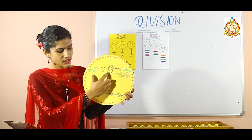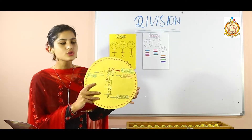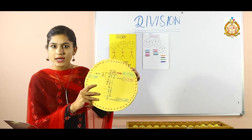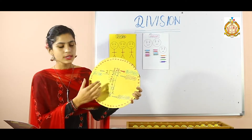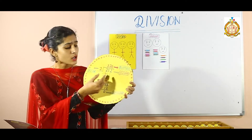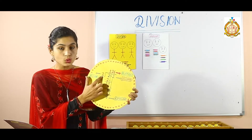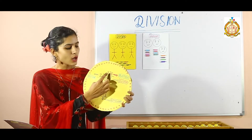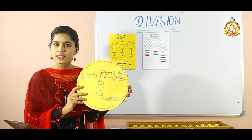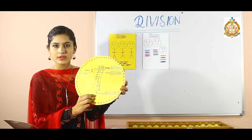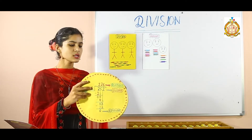Dividend: the number we want to divide is called the dividend. Here, 252 is the dividend. Divisor: the number with whom we want to divide is known as the divisor. Whatever result comes after division, that result is known as the quotient. And whatever the remaining left portion is, that is known as the remainder.